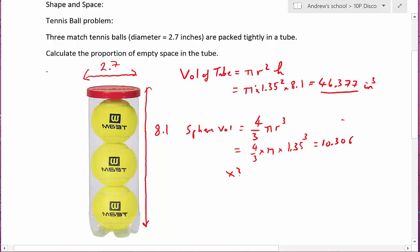And of course there are 3 of them so altogether it's 30.918. So if the balls occupy 30.918 cubic inches and the whole tube occupies 46, then the empty space must be 46.377 minus 30.918 which is 15.459.